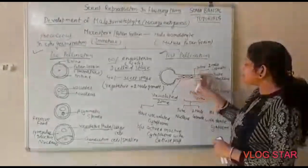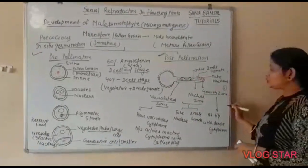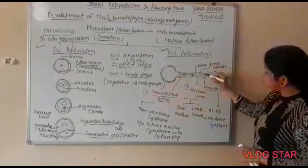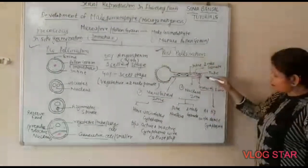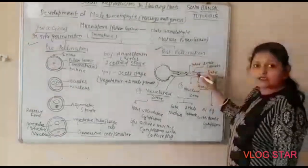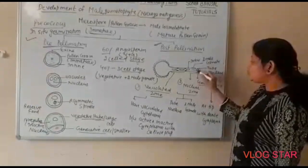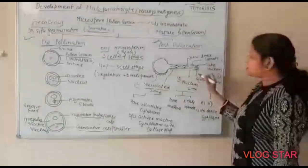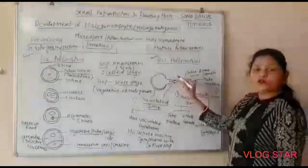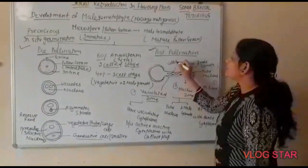When the pollen grain falls on the stigma, the pollen tube is made up of only intine. The pollen tube has three zones: the growth zone at the tip, which contains dense cytoplasm; the nuclear zone behind it, containing the tube nucleus and two male gametes; and the vacuolated zone at the back, where vacuoles divide inactive cytoplasm from active cytoplasm with the help of a callose plug.